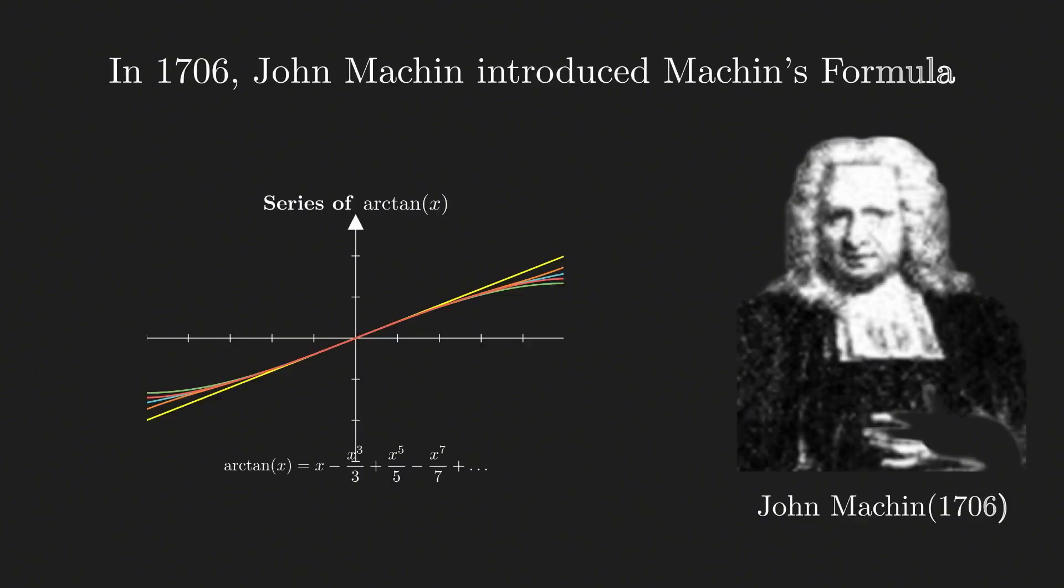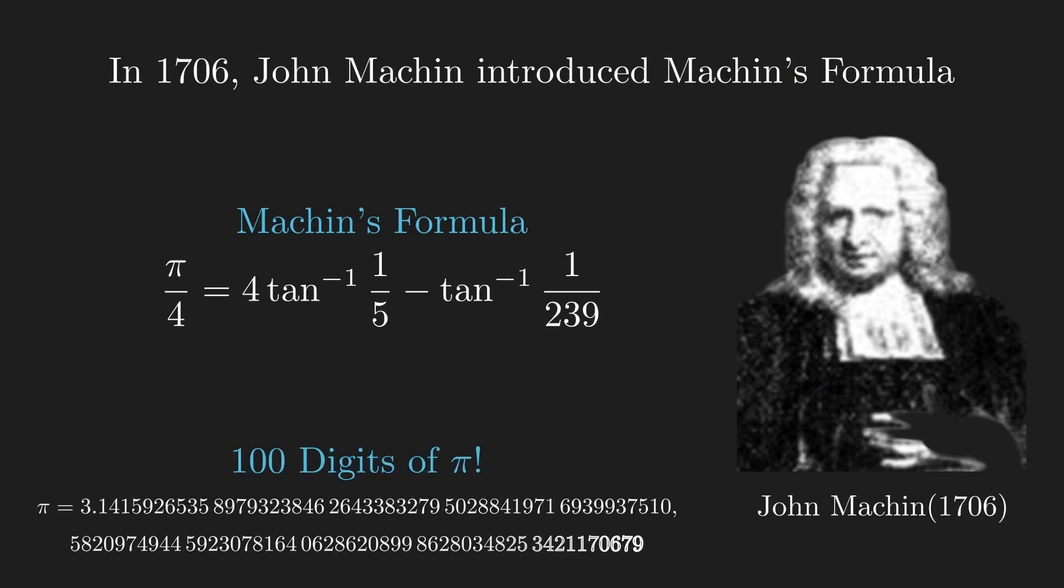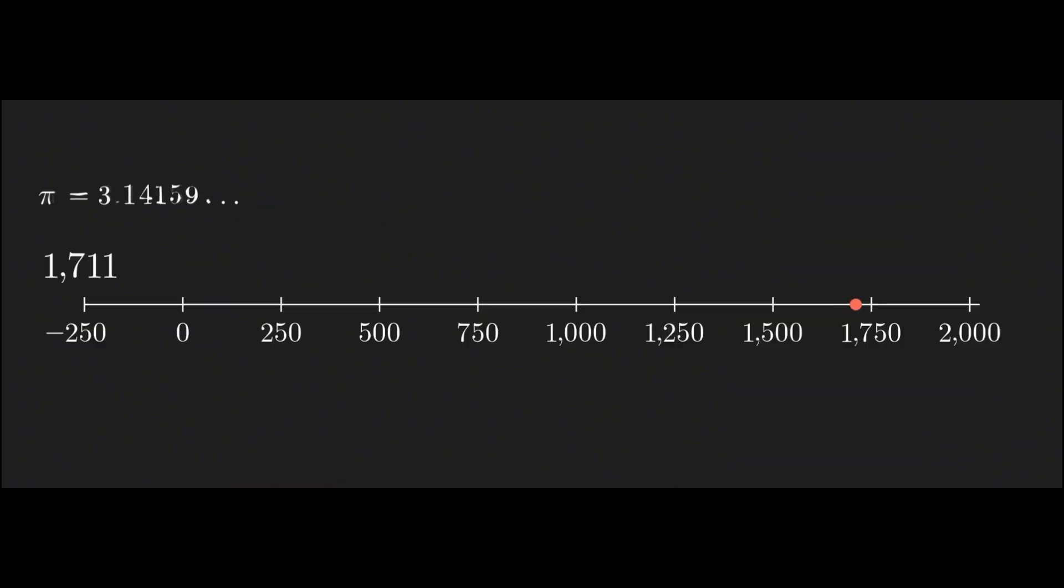The breakthrough came in 1706, when John Machin, inspired by the Archden series, introduced an algorithm that converged most faster. This converged 100 times faster than the basic Archden series and Newton's formula. Using it, Machin calculated Pi to 100 decimal places by hand. For over two centuries, mathematicians followed in Machin's footsteps, manually pushing Pi further digit by digit.